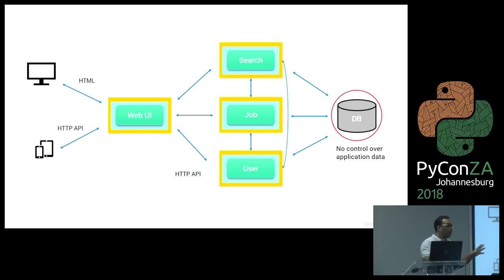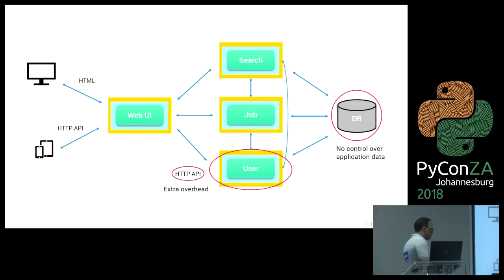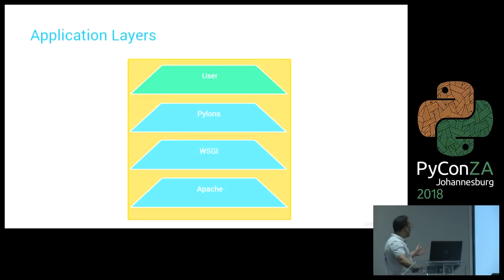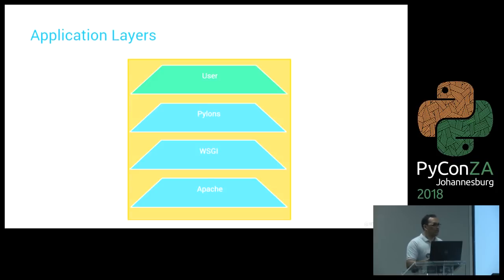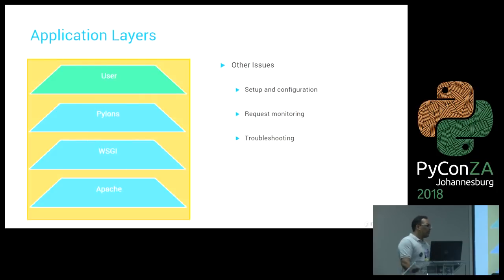The first problem was the database — each application wasn't in charge of its own data. If the job application wanted to find out what users belonged to it, they'd just do a SQL join, which meant that if the job application wanted to make schema changes, it couldn't do that in isolation. You had to talk to other teams, so you lost autonomy. Applications also started talking to each other, meaning logic changes also couldn't be done in isolation. On top of that, every application now had layers — a web server, Apache with WSGI, a Python web framework like Pylons — adding complexity even though these weren't customer-facing services.